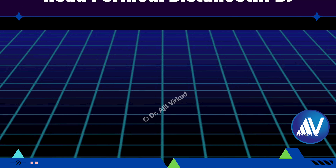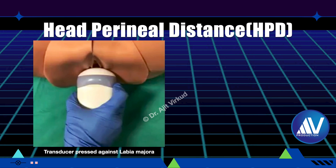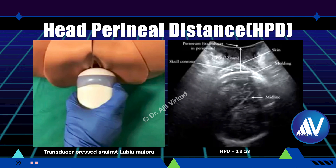Using intrapartum sonography, there is another way to assess progress of labor: by measuring head-to-perineum distance. This corresponds to the part of the birth canal yet to be passed by the fetal presenting part. The transducer is placed transversely between the labia majora, with soft tissue compressed against the pubic bone. The distance from the outer edge of the parietal bone — not the molded scalp — to the curved line of the transducer corresponding to the perineum is measured. In the illustrated case it is 3.2 centimeters. As descent of the head occurs in labor, the head-to-perineum distance decreases.